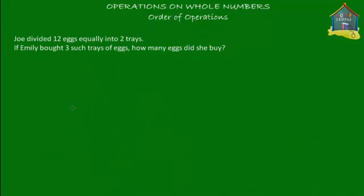Joe divided 12 eggs equally into two trays. If Emily bought three such trays of eggs, how many eggs did she buy? Let's write a number statement: Joe divided 12 eggs into two trays, so we divide by two. Emily bought three such trays, so we multiply by three. The number statement is 12 divided by two times three.